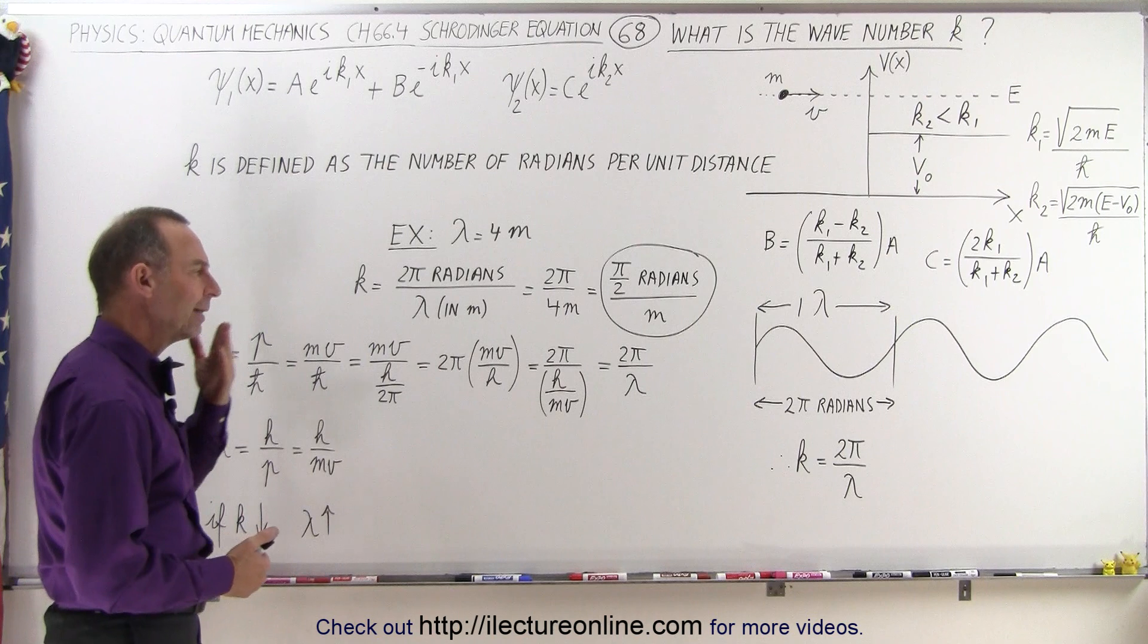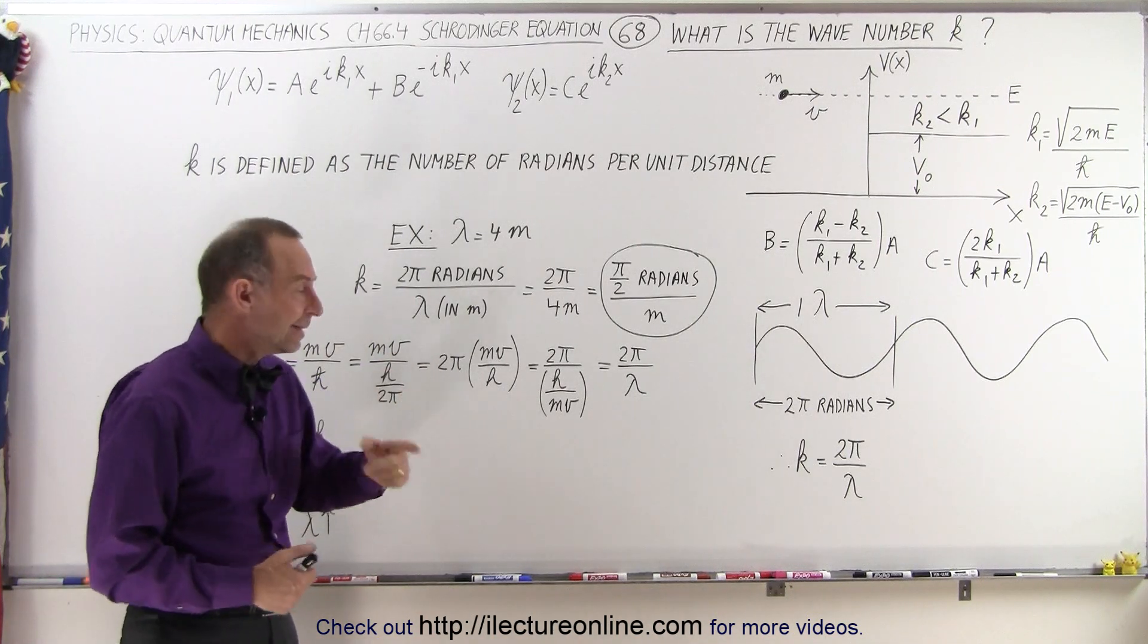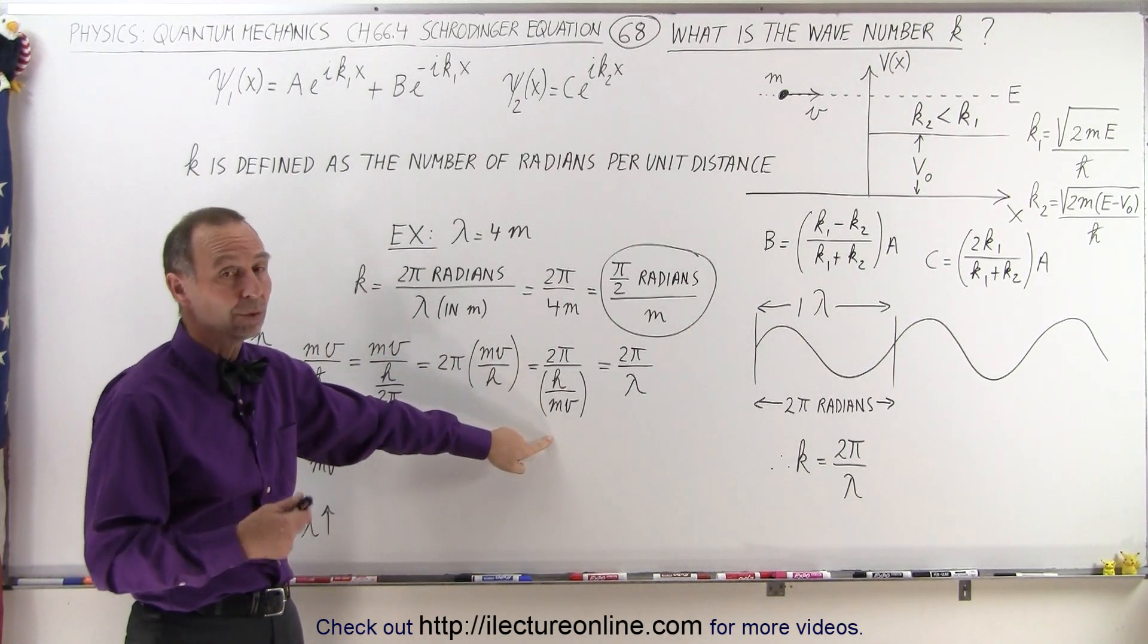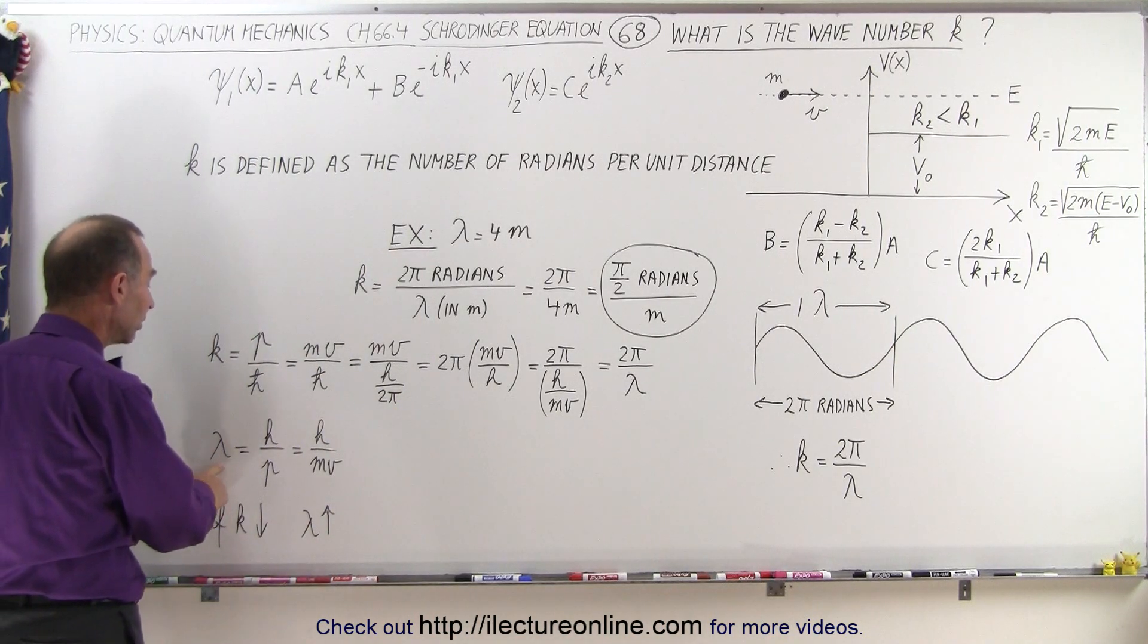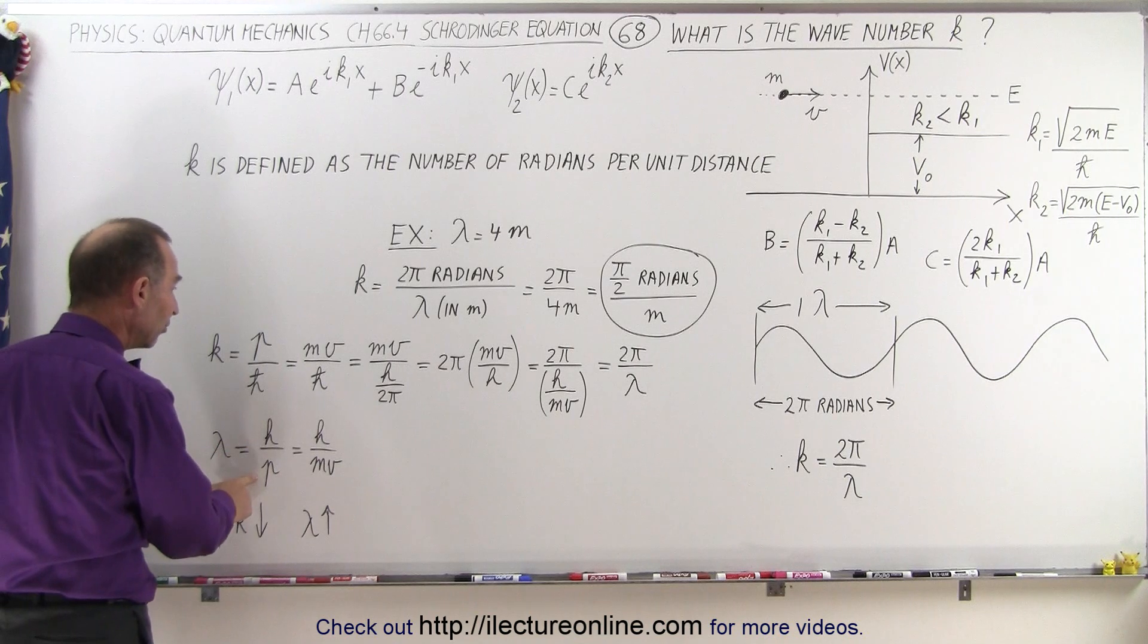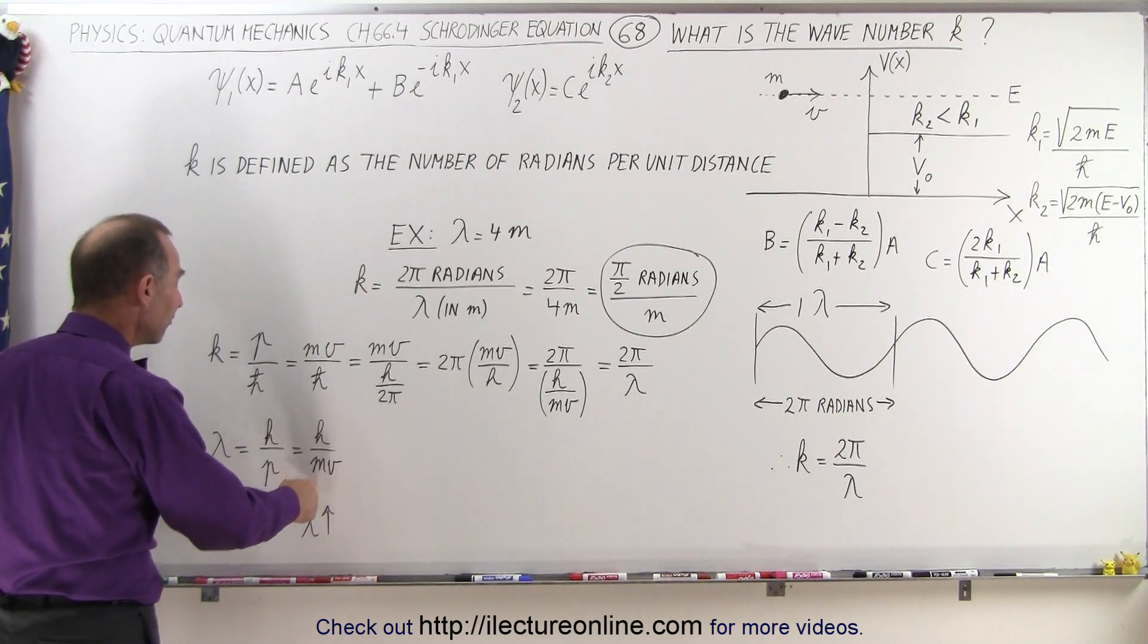That means that a wavelength of a particle is indeed h divided by mv, which was found a little over a century ago. So we can define the wavelength of a particle as h divided by the momentum, or h divided by mv.